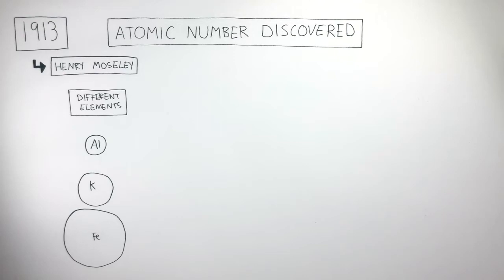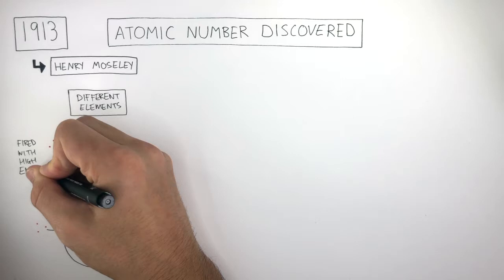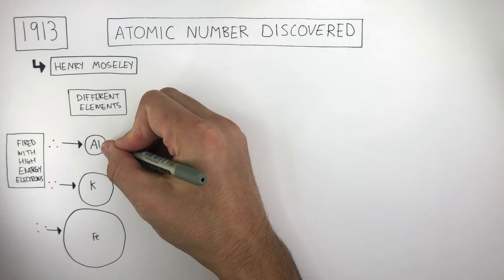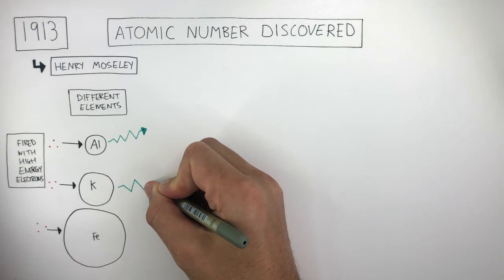He fired them with high-energy electrons, represented by the red dots. The high-energy electrons hit the nucleus of each atom, causing x-rays to be released, represented by the green zigzag lines.